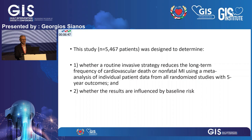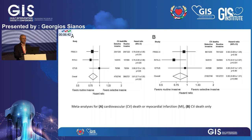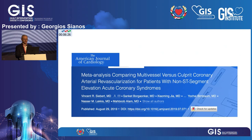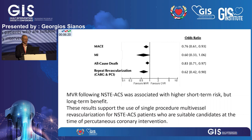That meta-analysis examined whether results are influenced by baseline risk. The FRISC II, RITA, and ICTUS trials all favored the routine invasive strategy over selective invasive management for both death/MI and cardiovascular death. A more recent 2019 meta-analysis found that multivessel revascularization in NSTEMI ACS was associated with higher short-term risk but better long-term outcomes, supporting routine single-procedure multivessel revascularization in suitable NSTEMI candidates.